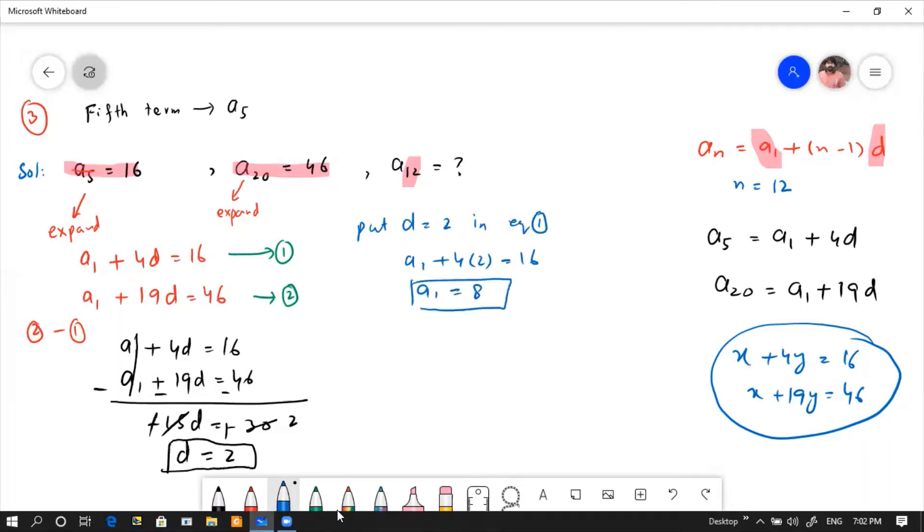Finally, we have to find A12. So if I write the formula, A12 is A1 plus 11d. A1 is 8, d is 2. So 8 plus 22, what will be 30? A12 will be 30.